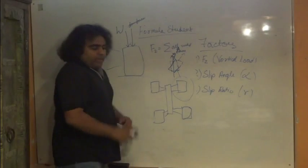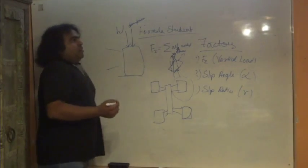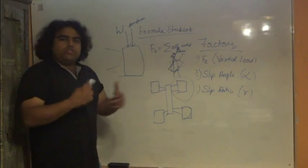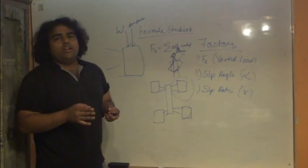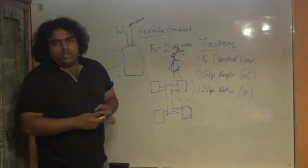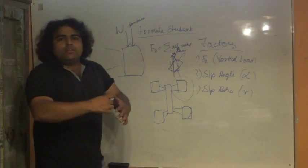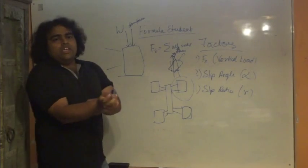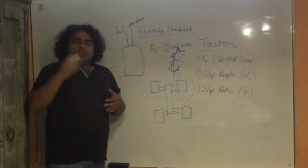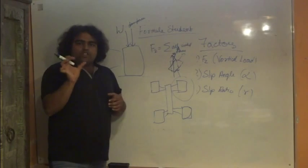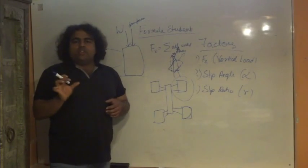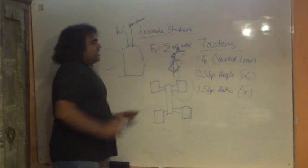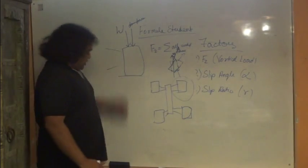What is slip ratio? When you are accelerating and the wheels are rotating, you will never find in a running car a condition of perfect rolling — there will always be a certain amount of slip in the tyre. The ratio between the slip velocity and the actual rotating velocity is the slip ratio. So these are the three factors that really matter: Fz, slip angle, and slip ratio — for the longitudinal force and the lateral force.